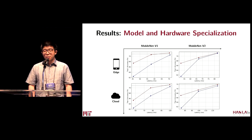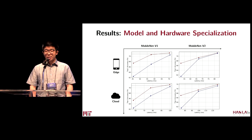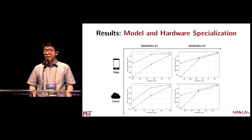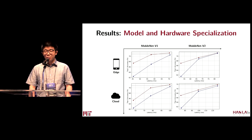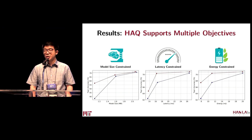Our framework can also provide specialization for different models and hardwares. In our paper, we explore two hardware configurations, including edge and cloud accelerators, and two different models, including MobileNet V1 and MobileNet V2. Across all settings, our HAQ consistently outperforms the uniform quantization baseline by a very large margin.